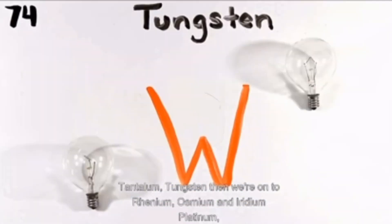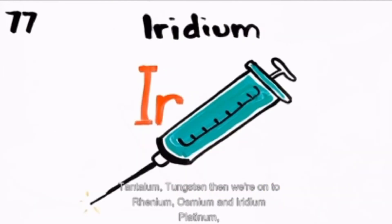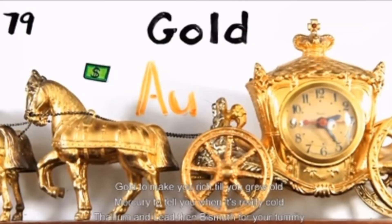Hafnium, tantalum, tungsten, and then we're on to rhenium, osmium, and iridium, platinum, gold to make you rich till you grow old.